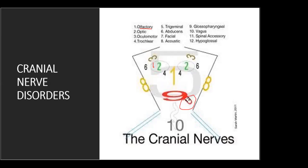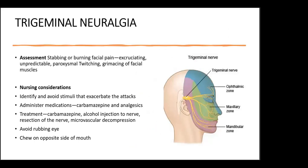Trigeminal neuralgia is a cranial nerve disorder causing chronic pain affecting the trigeminal nerve. You can see how it covers the ophthalmic, maxillary, and mandibular zones. It's the trigeminal nerve that carries sensations from the face to the brain. Even mild stimulation — brushing teeth or applying makeup — may trigger excruciating, unpredictable pain. This is your fifth cranial nerve.